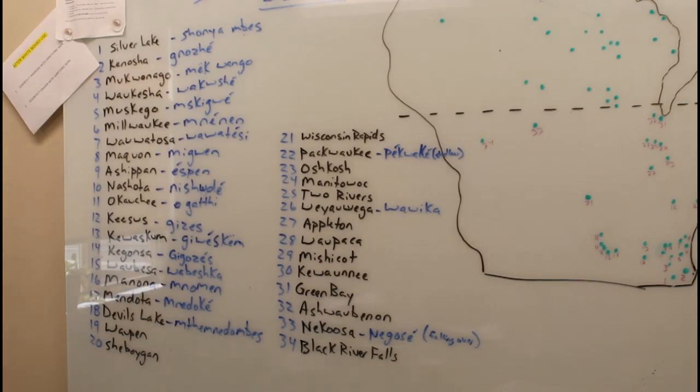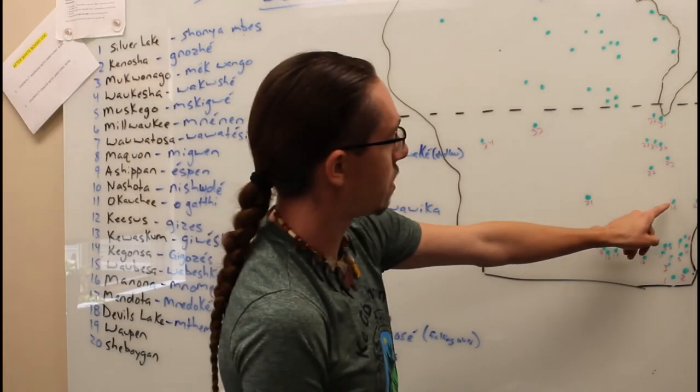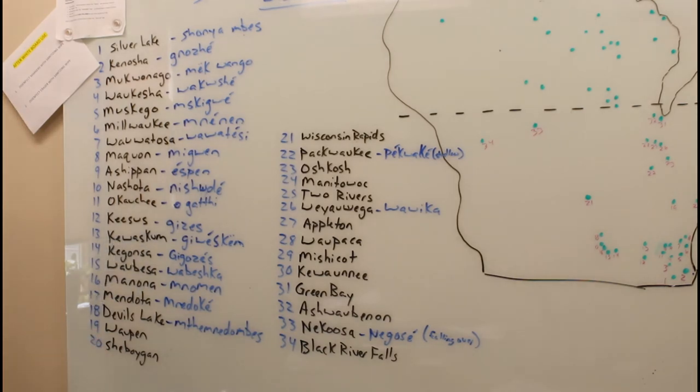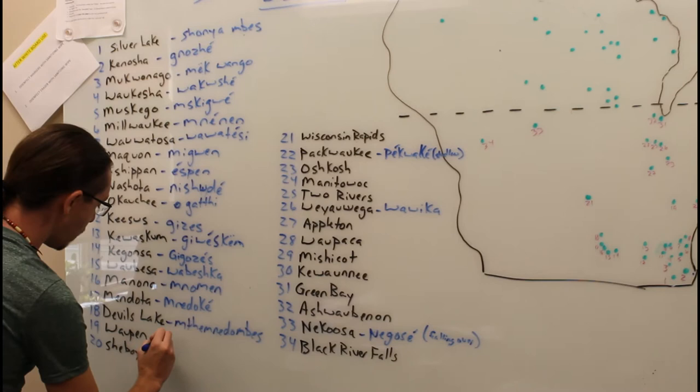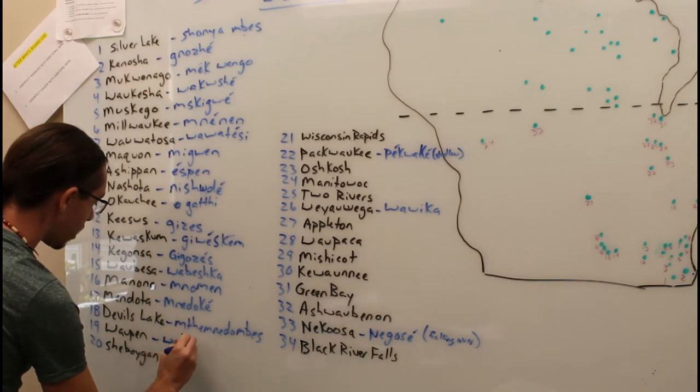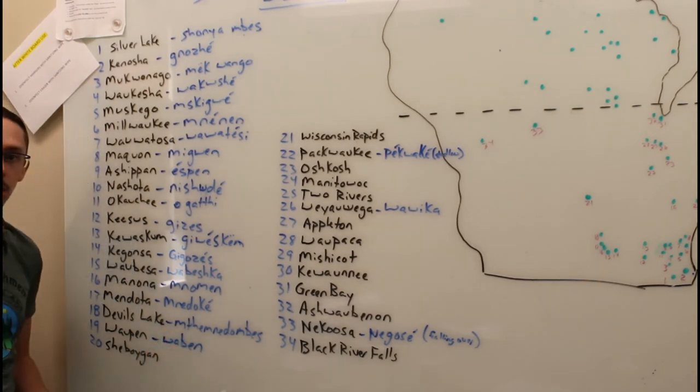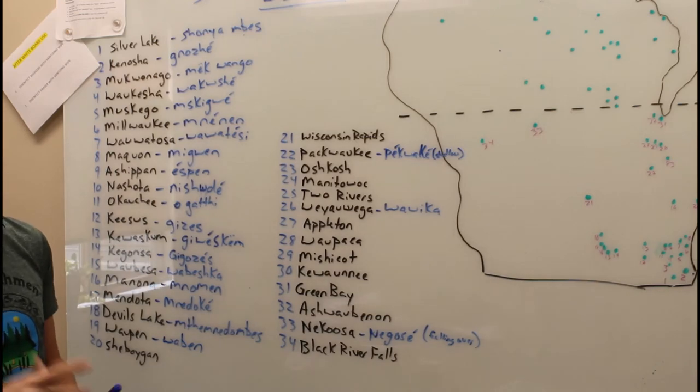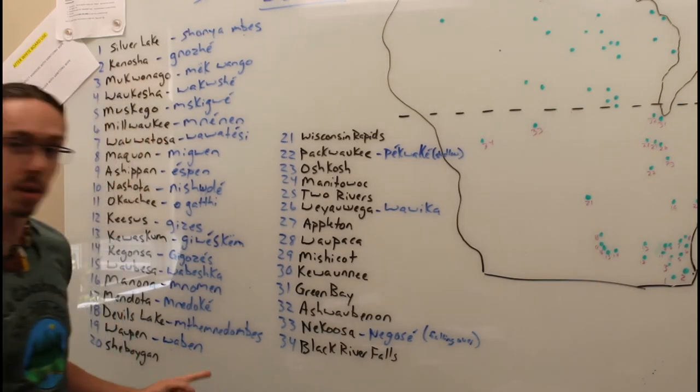Then you got number 19, moving up here, Waunakee, Wisconsin, and that comes from Wabin. So you say Minowabin, that means it is a good morning. Wabin is morning.